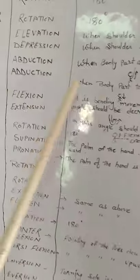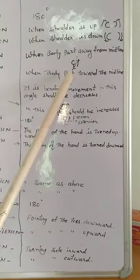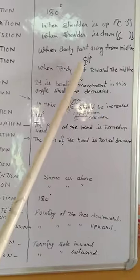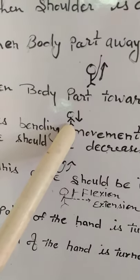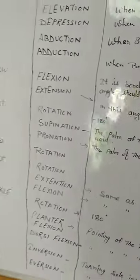And adduction, see once again when body part toward the midline. It means hands again come close to the axis. Next is elbow joint.